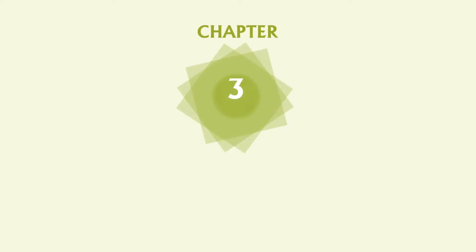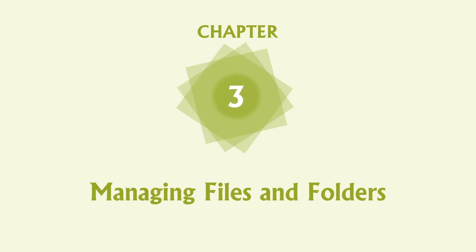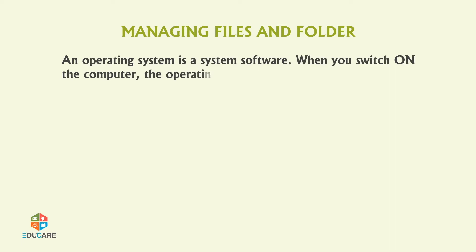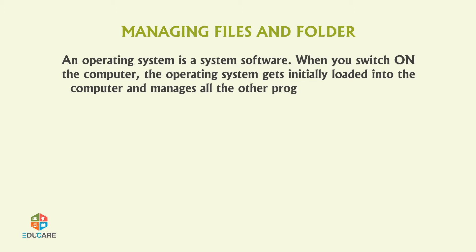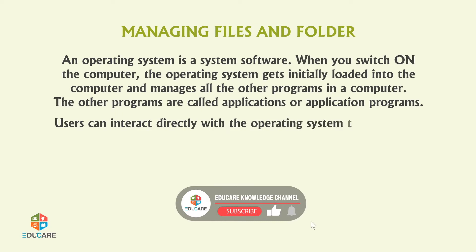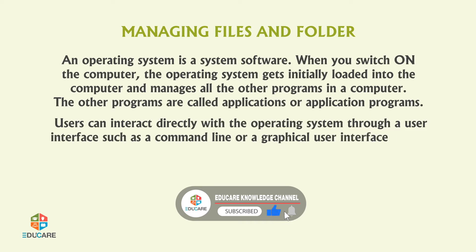Chapter 3: Managing Files and Folders. An operating system is a system software. When you switch on the computer, the operating system gets initially loaded into the computer and manages all the other programs in a computer. The other programs are called Applications or Application Programs. Users can interact directly with the operating system through a user interface such as a command line or a graphical user interface, GUI.